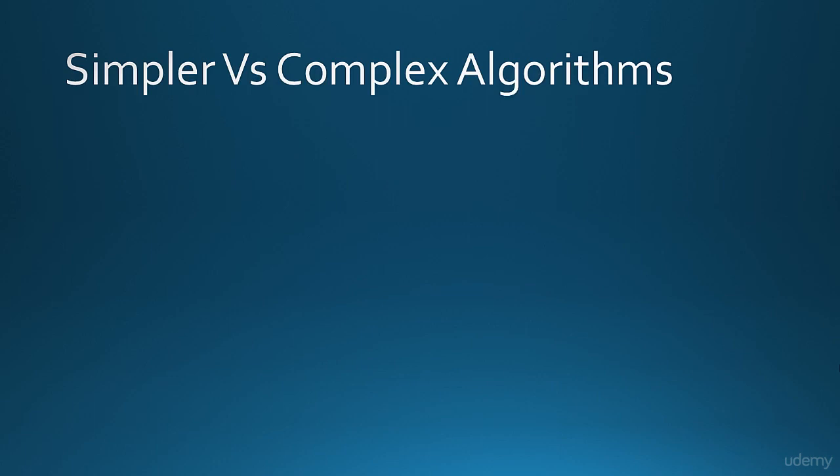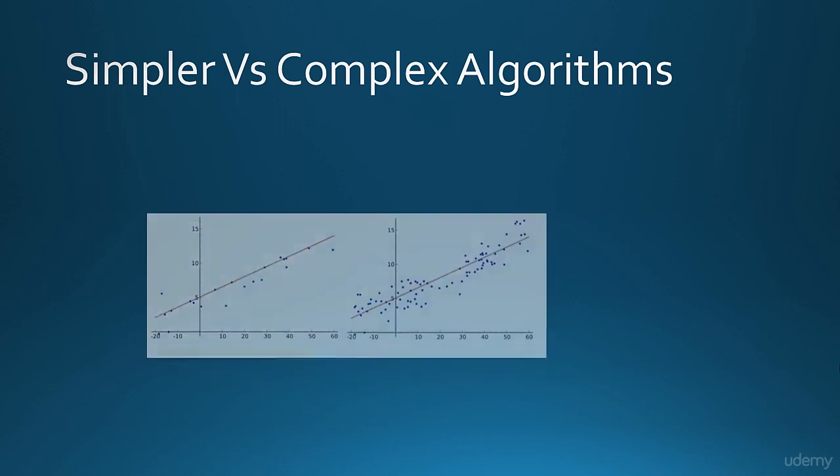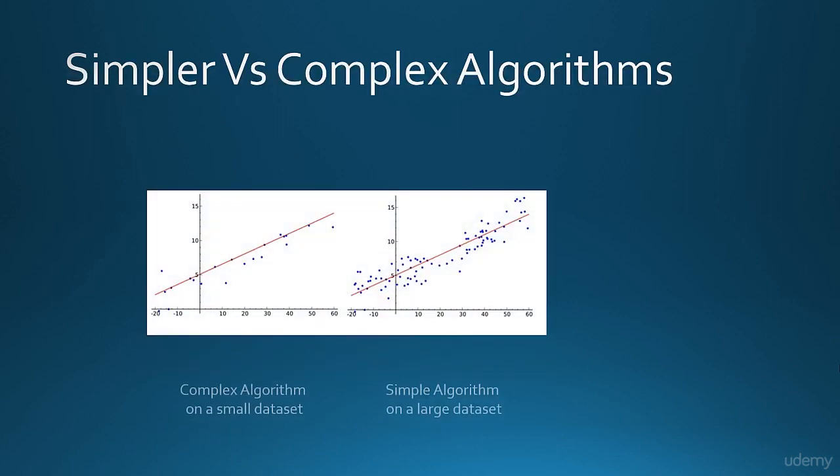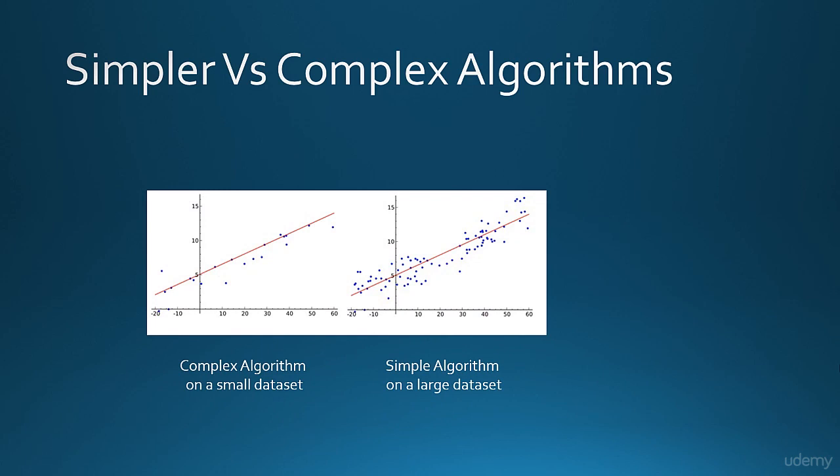One of the interesting discussion topics was why a simple algorithm on a large dataset would work better than a complicated algorithm on a small dataset. One of the core ideas with big data and Hadoop solutions is that it gives the ability to process a large amount of data. Studies have shown that simple algorithms over a large dataset yield better results than complex algorithms on smaller datasets.